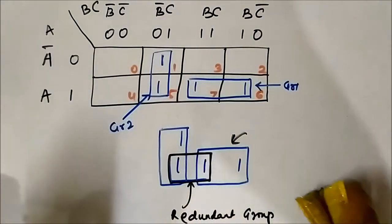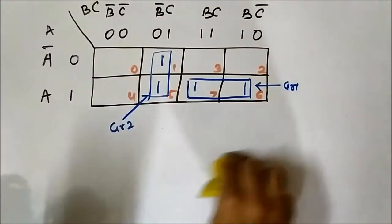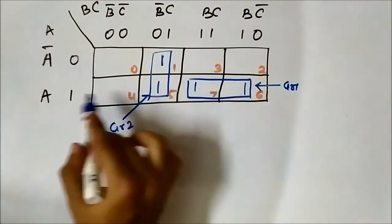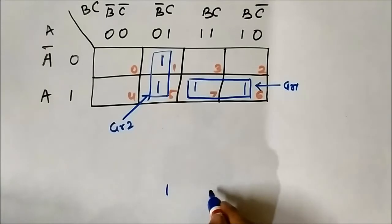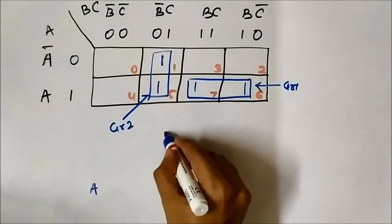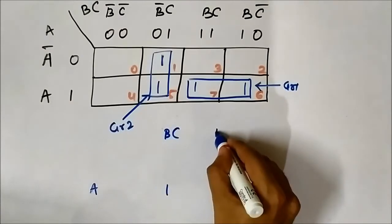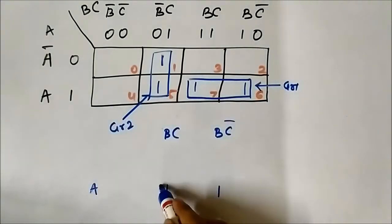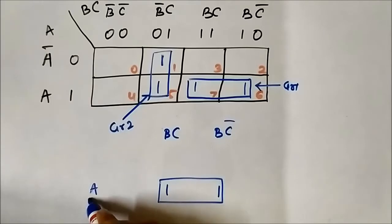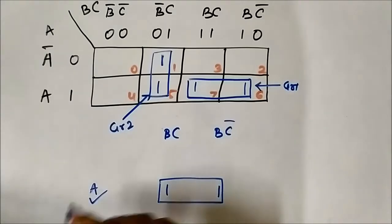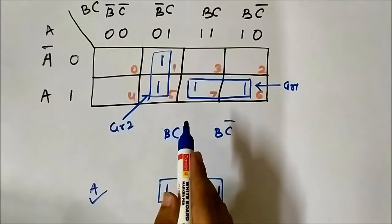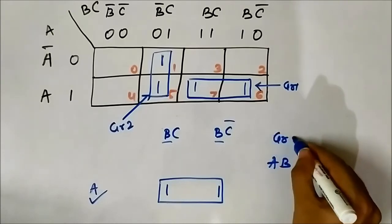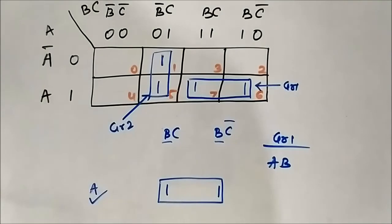Two groups are formed — 2 pairs. For Group 1: looking at the cells, in the horizontal side we have A common in both cells. In the vertical side we have B common. So Group 1 is AB.